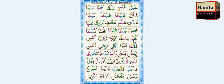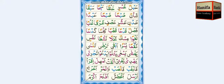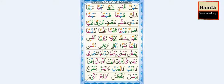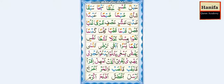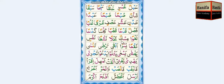Lam, Ghayin, Fatha — lag. Waaw, Fathatan — wan. Lag-wan. Mim, Sin, Kasra — mis. Kaf, Dammatan — kun. Mis-kun. Noon, Ha, Fatha — nakh. Lam, Fathatan — lan. Nakh-lan.